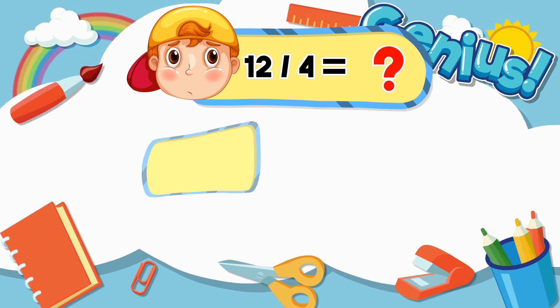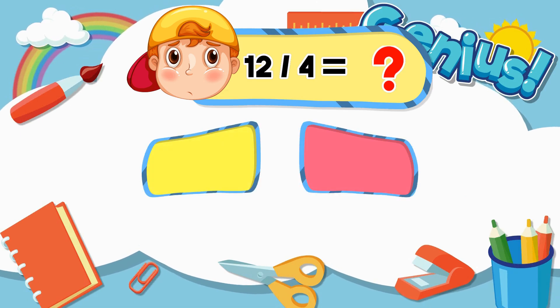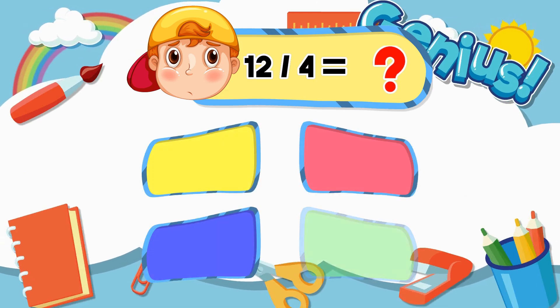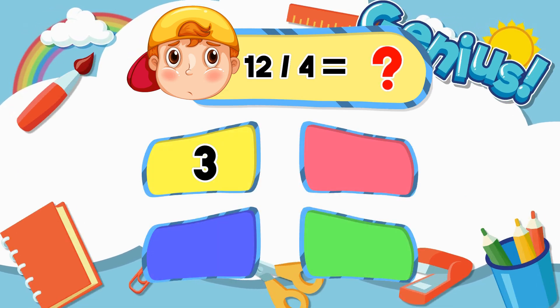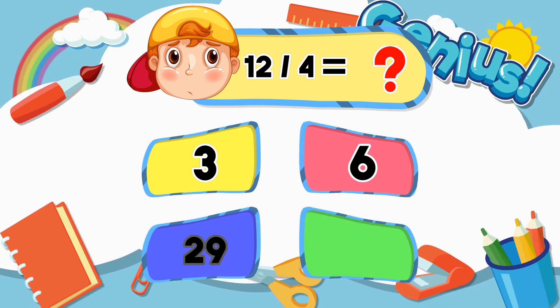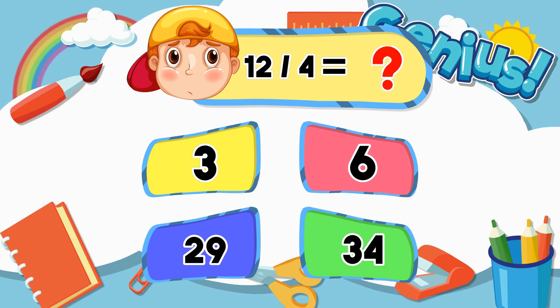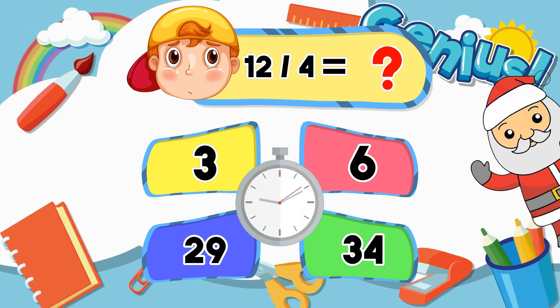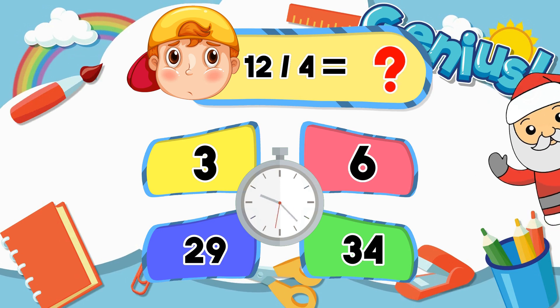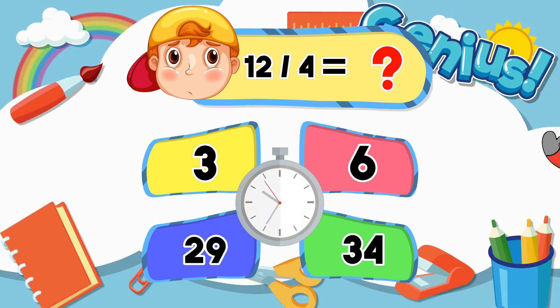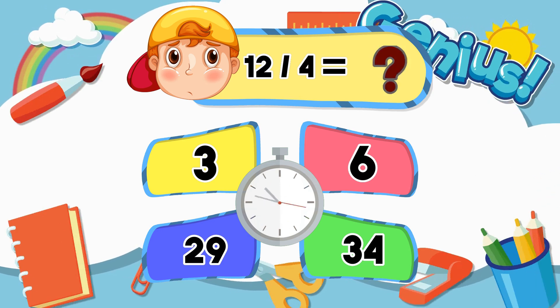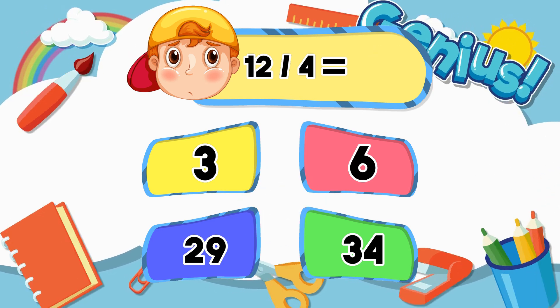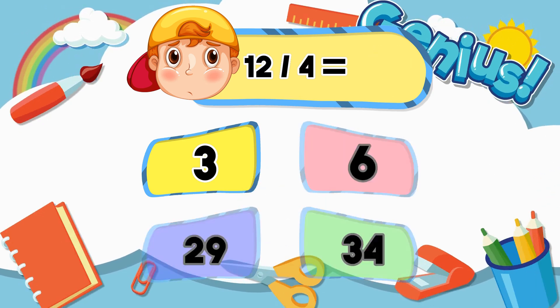What is 12 divided by 4? 3, 6, 29, 34. The correct answer is 3.